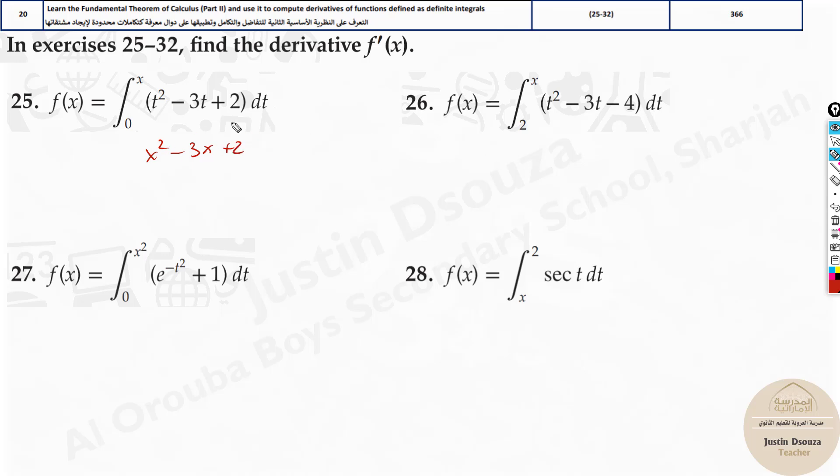That's n. No plus c or anything, because it's derivative. Now even over here, if there is any constant, any number, it goes off, okay? So it will be, instead of t squared, all you need to do is x squared minus 3x minus 4.